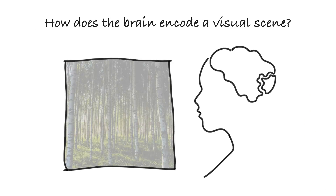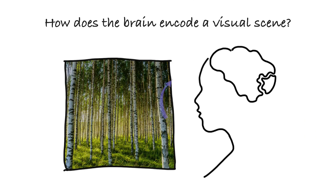Visual signals from the outside world are relayed from the retina to the visual thalamus or LGN to the primary visual cortex or V1. From V1, information ascends to several higher areas via inter-areal feed-forward connections, and higher areas in turn send information back to V1 via feedback connections.